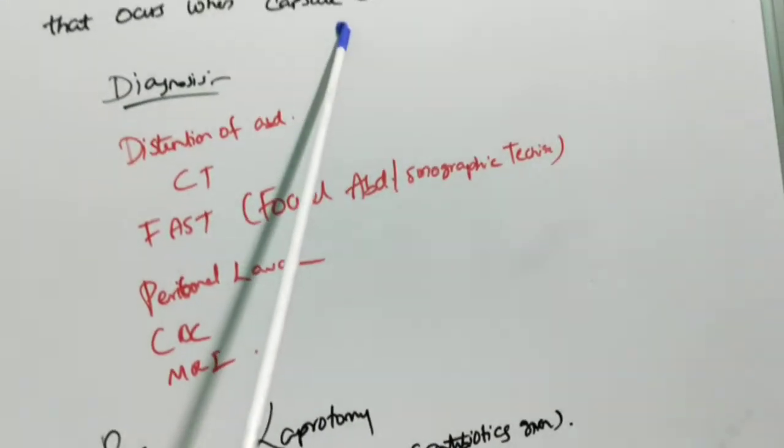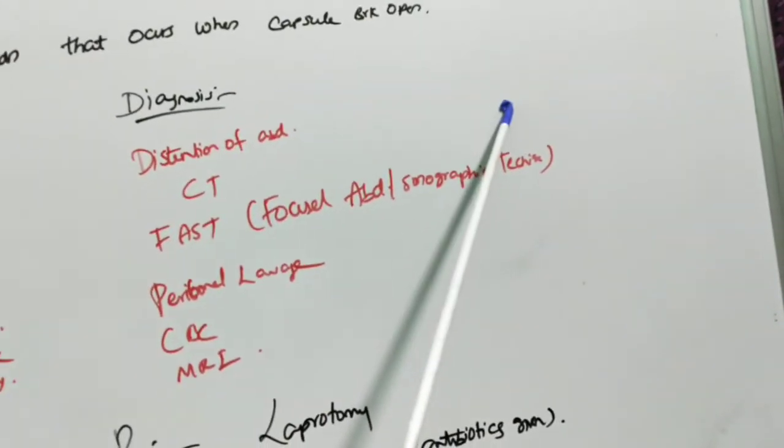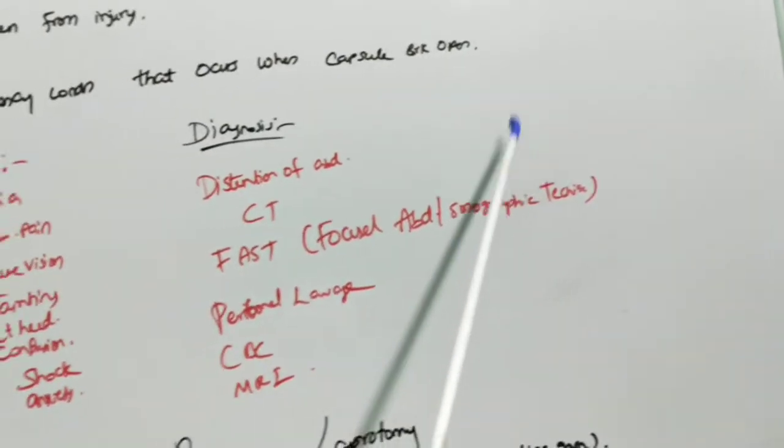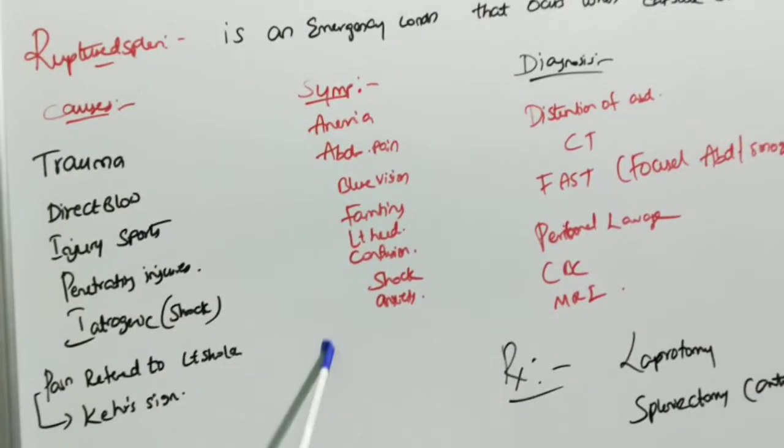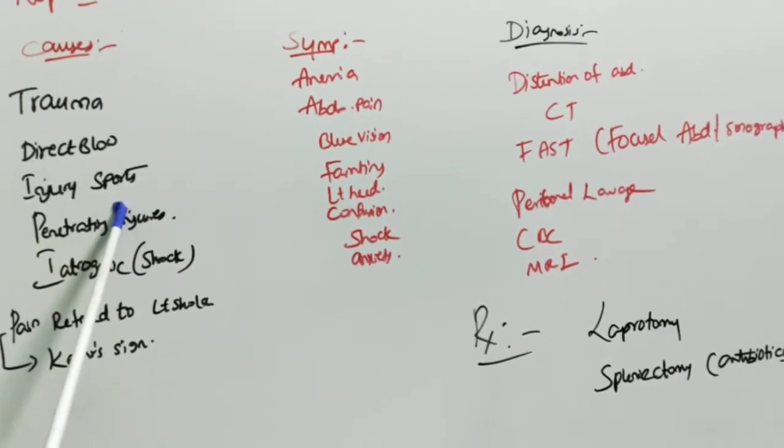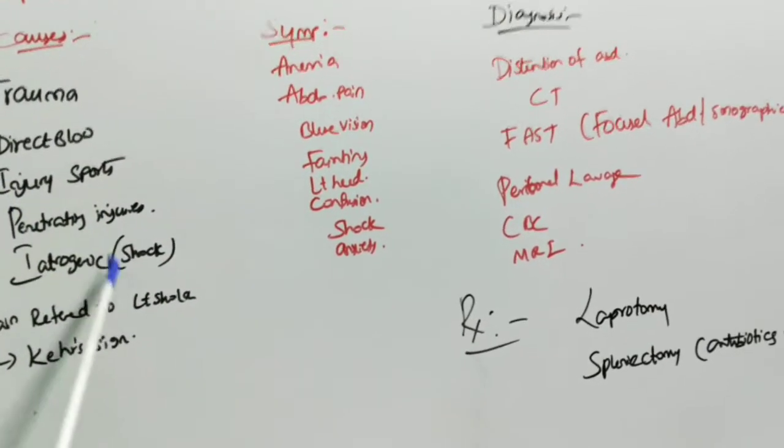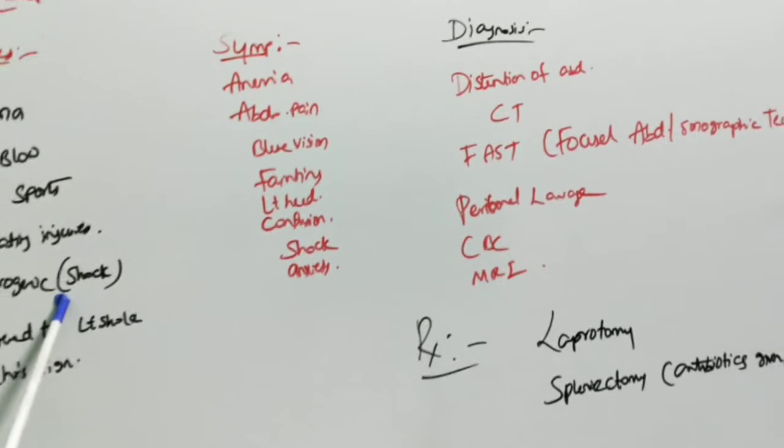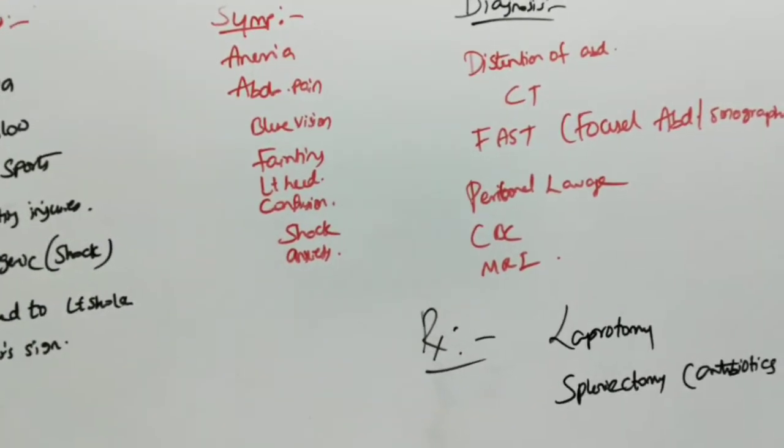When the capsule is broken, splenic contents may come out into the external area. Causes of ruptured spleen include trauma, direct blow, injury due to sports, penetrating injuries, and iatrogenic causes like shock. Pain may be referred to the left shoulder.